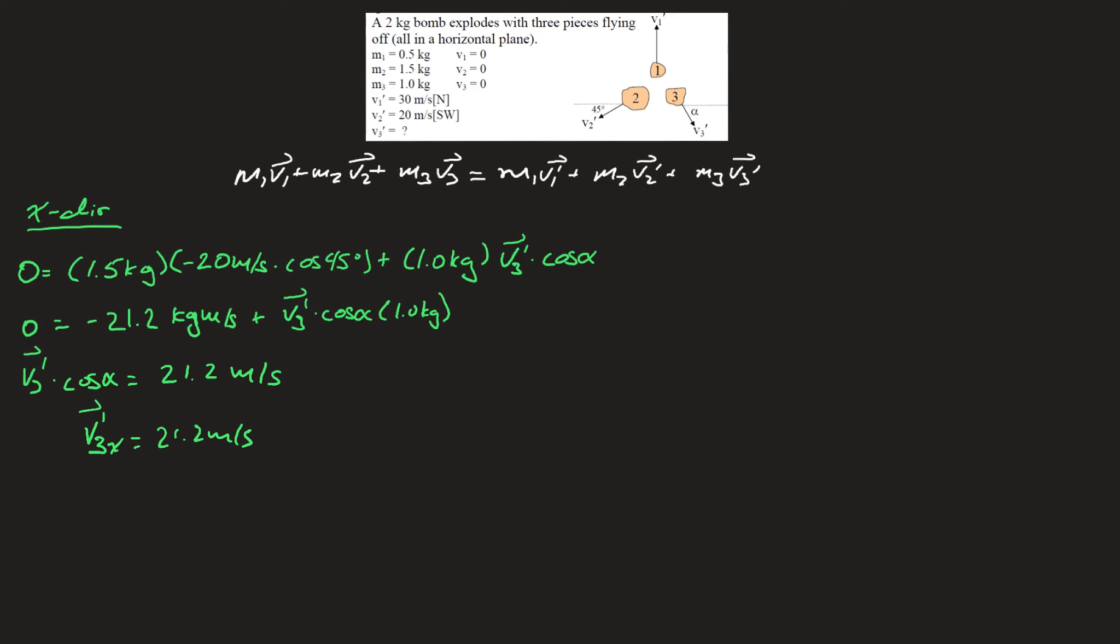I'm going to do the exact same thing with my y direction. The initial momentum is 0, but now I do have y components for all three parts. I'm left with 0.5 kilograms for mass number 1 times 30 meters per second.